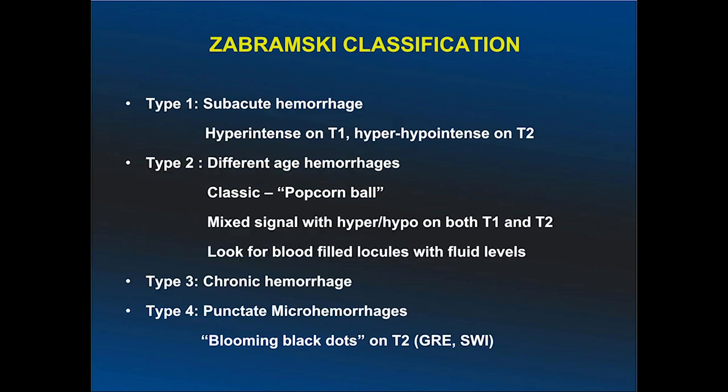Jabramski classified cavernomas based on their T1 and T2 appearance. Type 1 mimics subacute hemorrhage, which is hyperintense on T1 and hypointense on T2. Type 2 is the classical popcorn-ball type, which has mixed signal intensity on both T1 and T2.